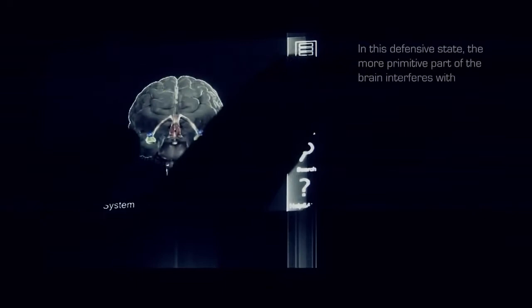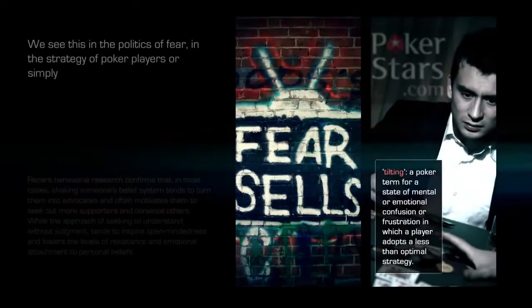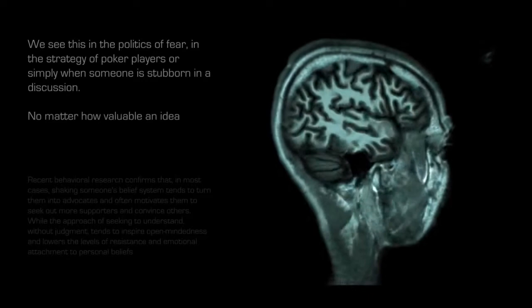In this defensive state, the more primitive part of the brain interferes with rational thinking, and the limbic system can knock out most of our working memory, physically causing narrow-mindedness. We see this in the politics of fear, in the strategy of poker players, or simply when someone is stubborn in a discussion.